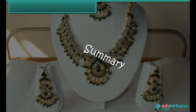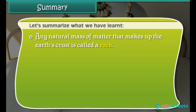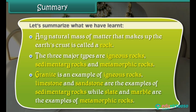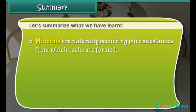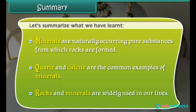Summary: Any natural mass of matter that makes up the Earth's crust is called a rock. The three major types are igneous rocks, sedimentary rocks, and metamorphic rocks. Granite is an example of igneous rocks. Limestone and sandstone are examples of sedimentary rocks, while slate and marble are examples of metamorphic rocks. Minerals are naturally occurring pure substances from which rocks are formed. Quartz and calcite are common examples of minerals. Rocks and minerals are widely used in our lives.